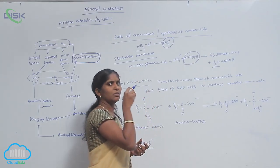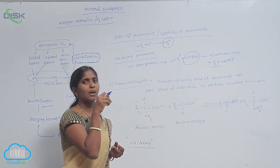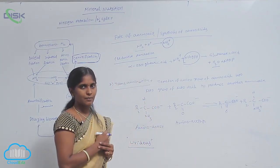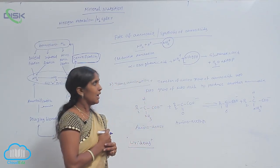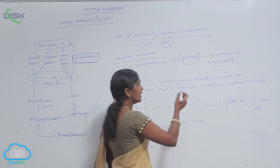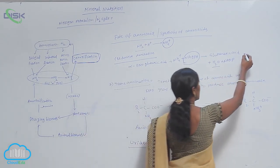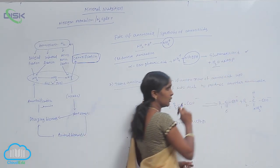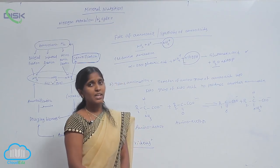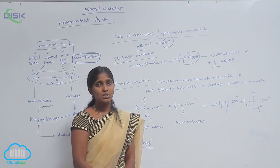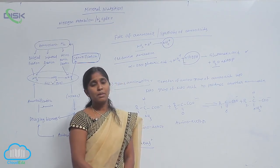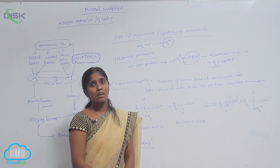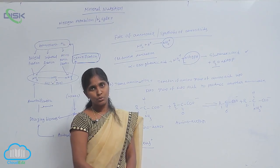This is one of the pathways of amino acid synthesis, and the type of amino acid produced is an acidic amino acid. From acidic amino acids, basic amino acids are also produced.